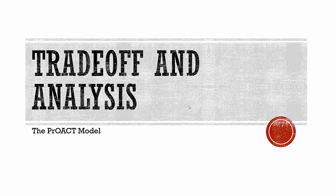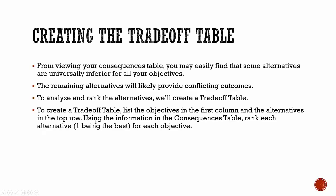This is the sixth video in the problem solving and decision-making series for Washburn University. In this video I'm going to walk you through creating the trade-off table. Throughout this video we'll be referencing information available in the last video and the last set of slides for the consequences table, so you might want to have that slide available as we work through this.